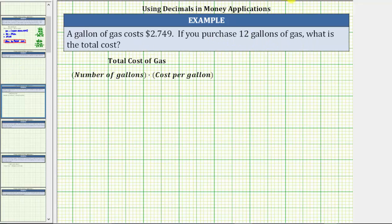The total cost is equal to the number of gallons times the cost per gallon. And because you purchase 12 gallons of gas at a cost of 2.749 dollars per gallon, the total cost is equal to 12 times 2.749.